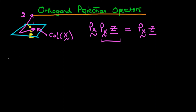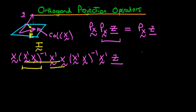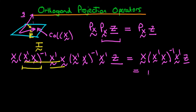Let's check that this is actually the case. If I operate PX on PX, I get X times X-prime times X to the power minus one times X-prime, and then the whole thing again: X times X-prime X to the power minus one times X-prime, operating on some vector Z which doesn't generally lie in the column space of X. Straight away, we can see that this term is just the inverse of this term, so these two terms cancel and yield the identity matrix, which passes through everything else. We're then left with X times X-prime times X to the power minus one times X-prime of Z, which is just the original projection operator times Z.